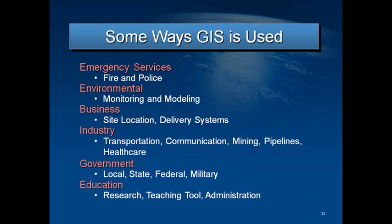Some ways GIS is used: you can go to ESRI.com and click on industries, and you'll get probably more information on how GIS is used than you might even care for. As we can see on this slide, GIS is used for emergency services such as fire and police — distributing them, where's the best place to put firehouses, where should the police be monitoring areas where it's the high crime rates.